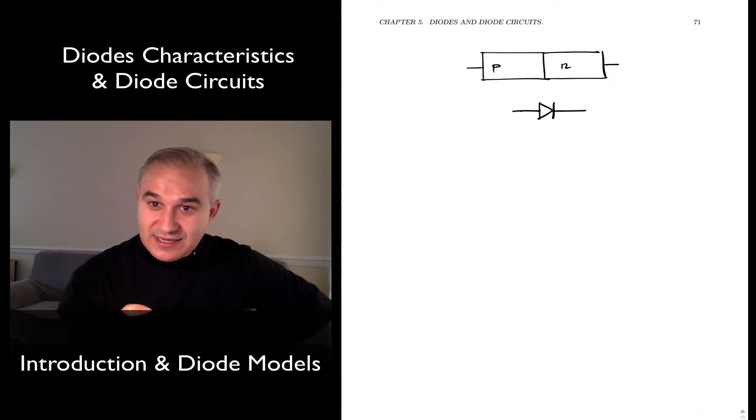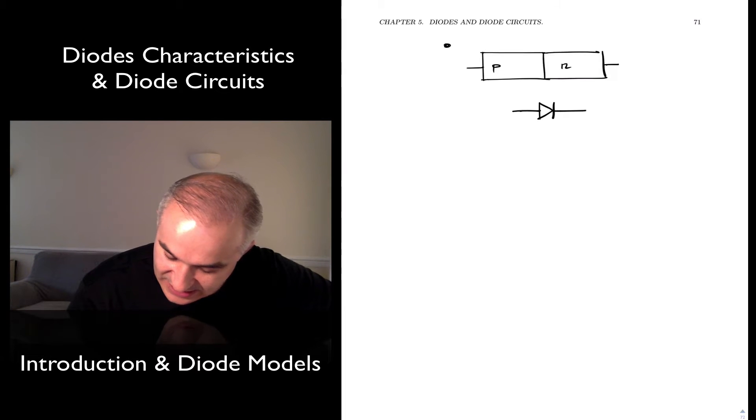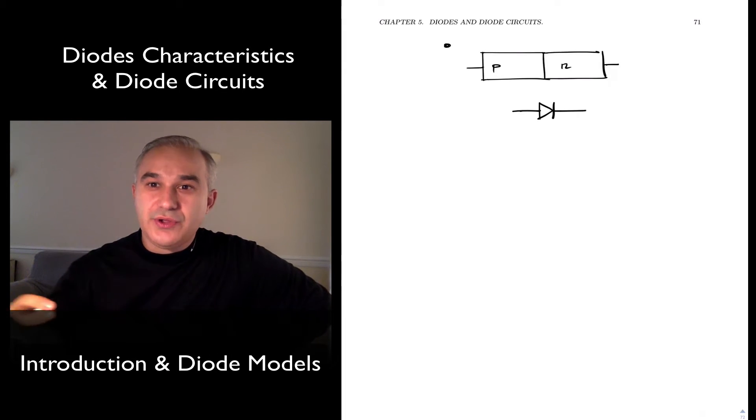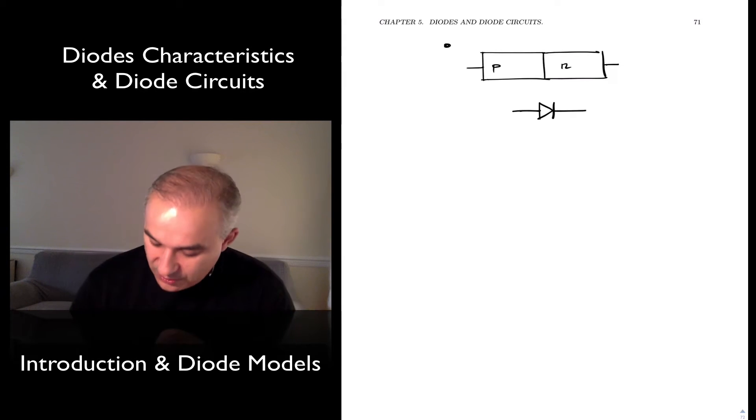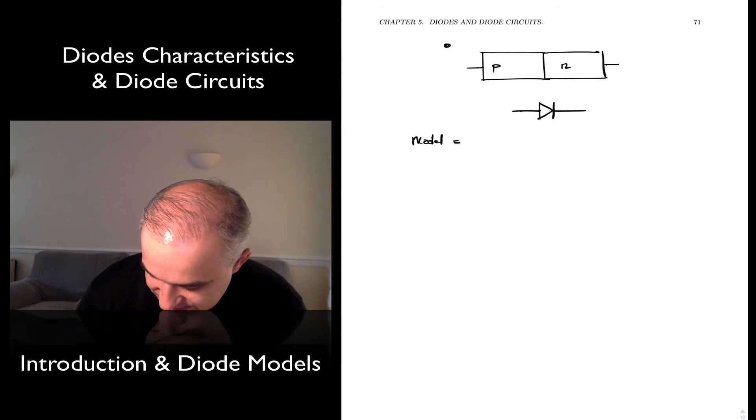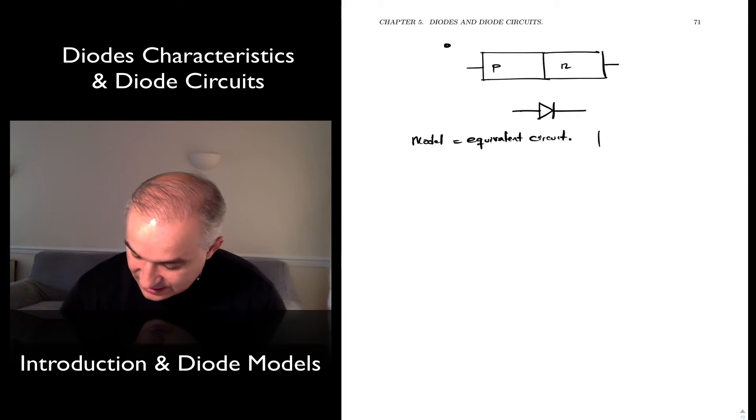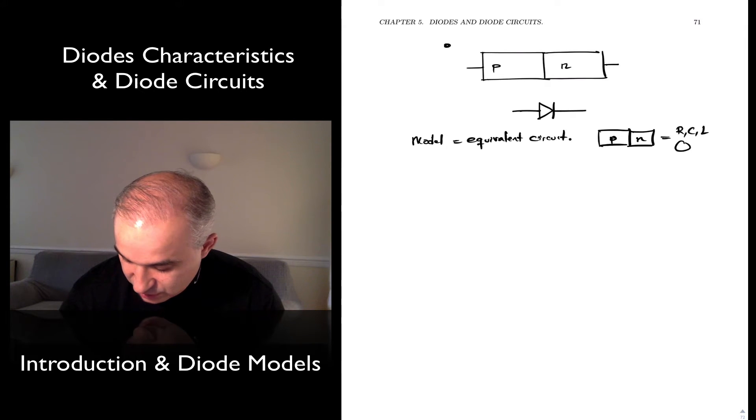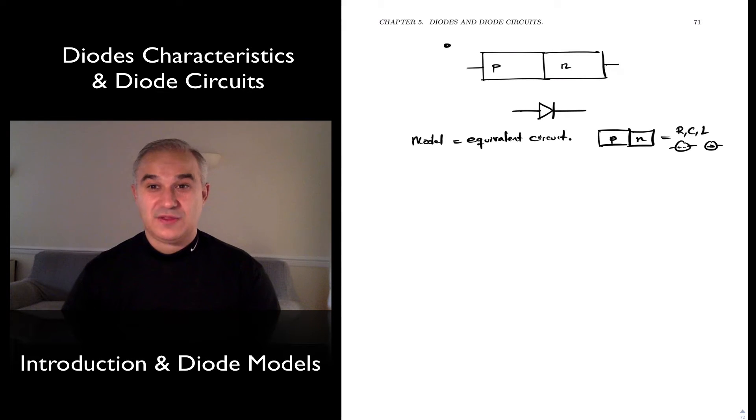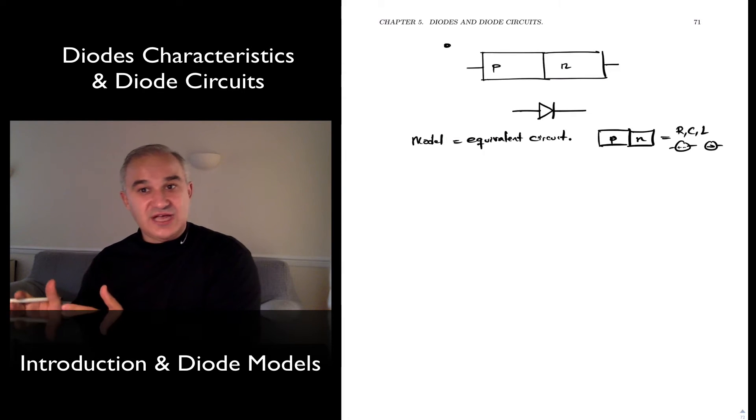Anytime you want to do circuits, to go from a device or material to actually do circuit analysis, you need to have a model of the device. And a model is an equivalent circuit. So we have p and n together - what is that equal to as a combination of resistors, capacitors, inductors, and voltage sources, or current sources, which may be dependent or independent? Any device or material that we're going to use for circuit analysis and design, we need to come up with a model.